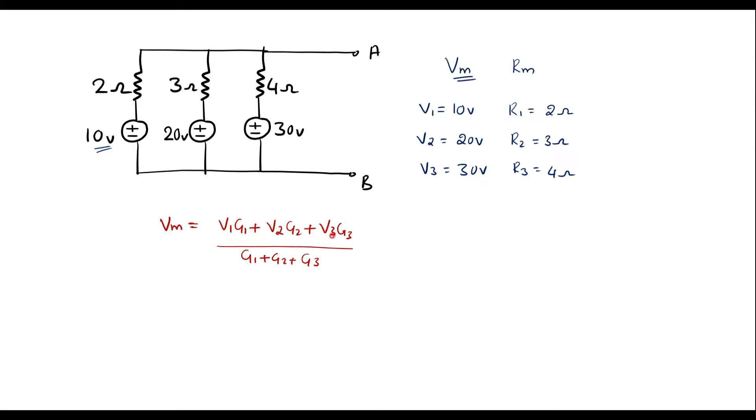Here, G1, G2, G3 are reciprocal of R1, R2, R3, that is nothing but conductances.